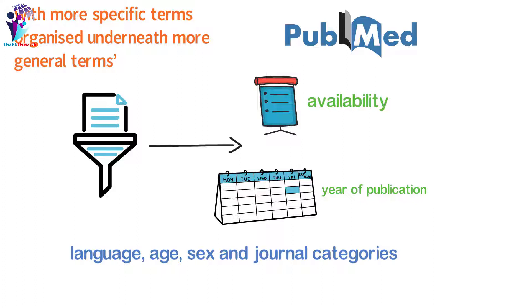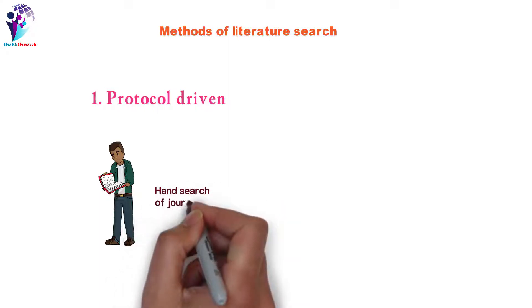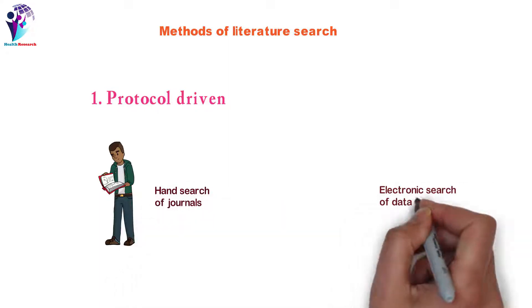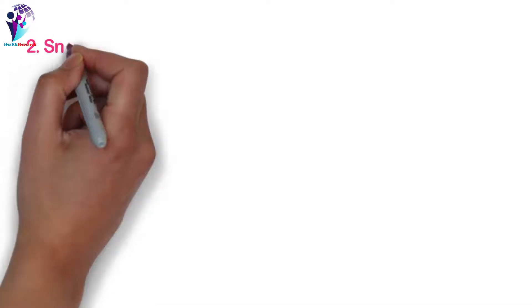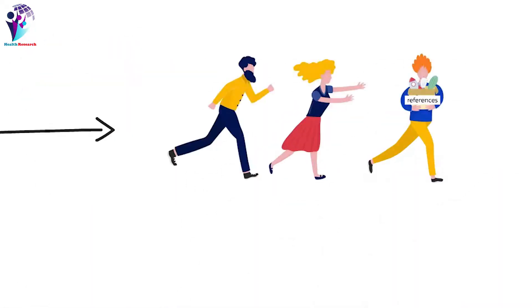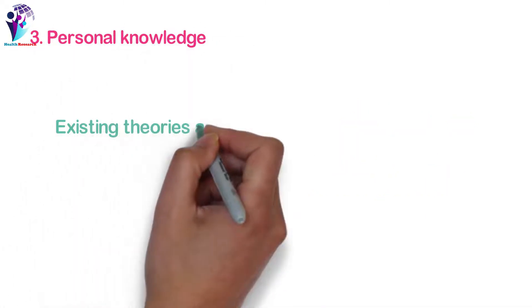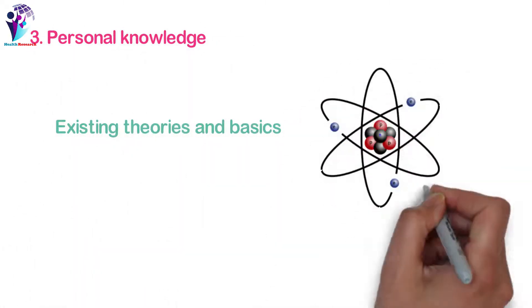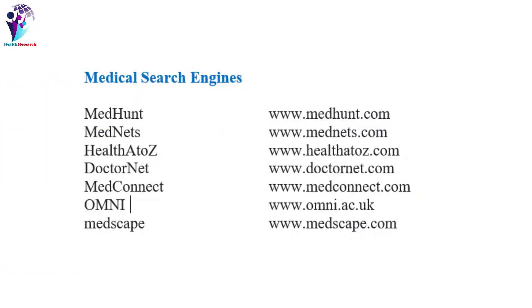The different methods of literature search include: protocol-driven searching, which involves manually searching journals by hand in a library; electronic search of databases; snowballing, which is the method where we chase references and track citations; and using personal knowledge and considering existing theories.